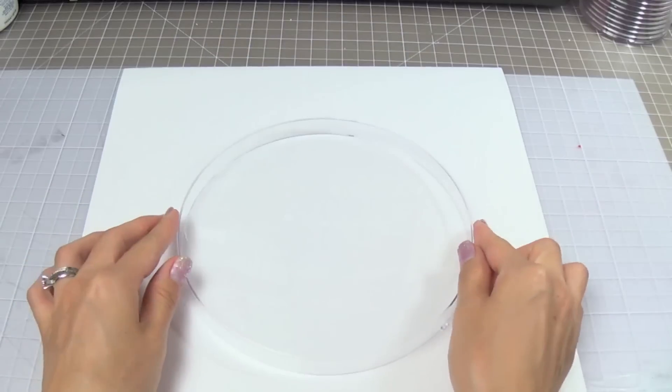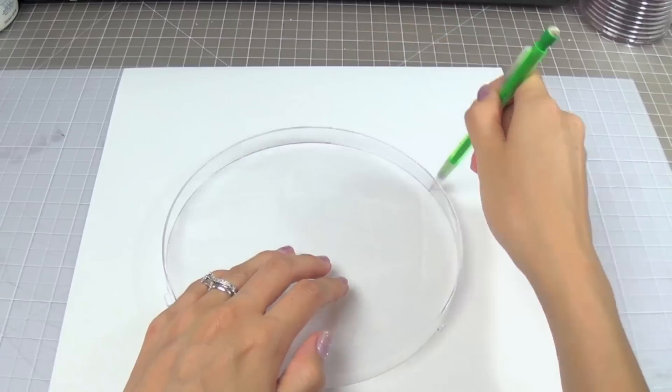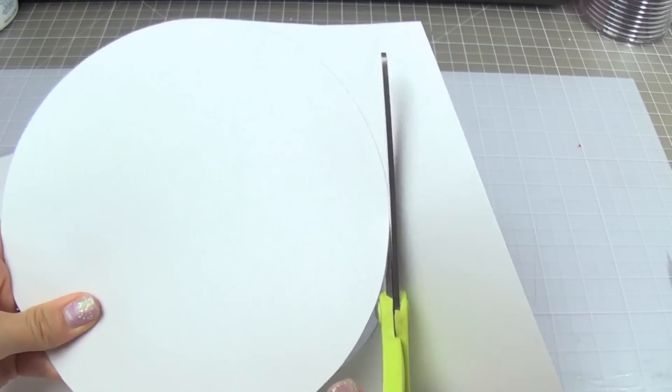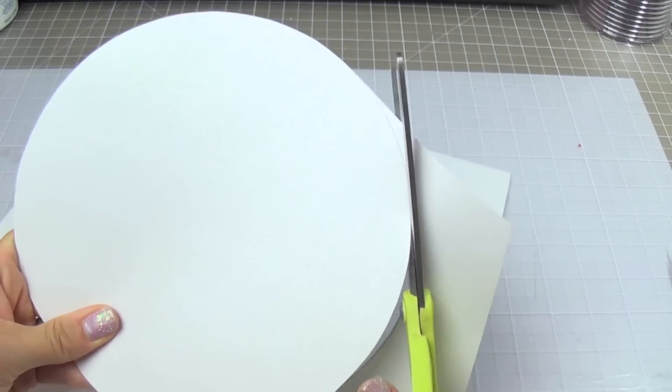Now time to make the clock face. I use the front plastic portion to trace the clock face onto scrapbooking paper. Then I cut out the circle slightly smaller than the original outline. This way it can fit into the clock frame.